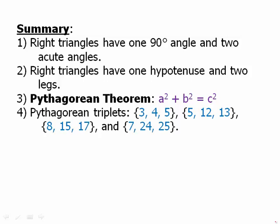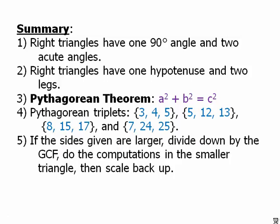The Pythagorean triplets, these are very handy to have memorized because they save you a lot of time. If you know these, you can avoid all kinds of unnecessary calculations. And finally, if the sides given are larger, the sides of the triangle given are relatively large numbers, divide down by the greatest common factor, do the computations in the smaller triangle, and then scale back up. That is a much easier way to think about these problems.